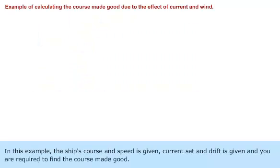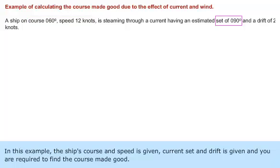In this example, the ship's course and speed is given. Current set and drift is given, and you are required to find the course made good.